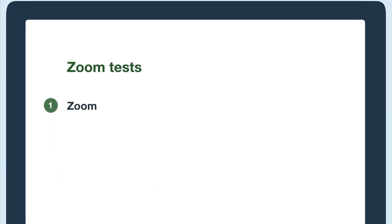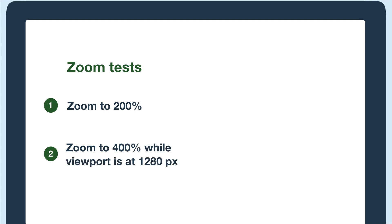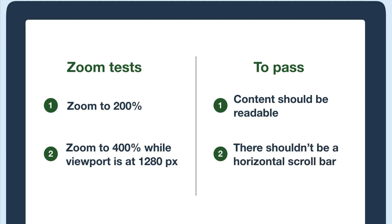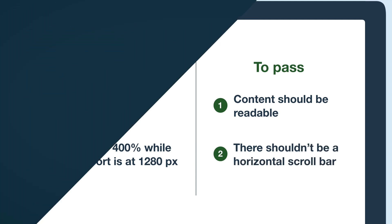So the two zoom tests you need to do are: zoom your content to 200%, and zoom your content to 400% while the viewport width is 1280 pixels. To pass, your content should still be readable and should not have a horizontal scroll bar. You're ready to do zoom tests on your own website.